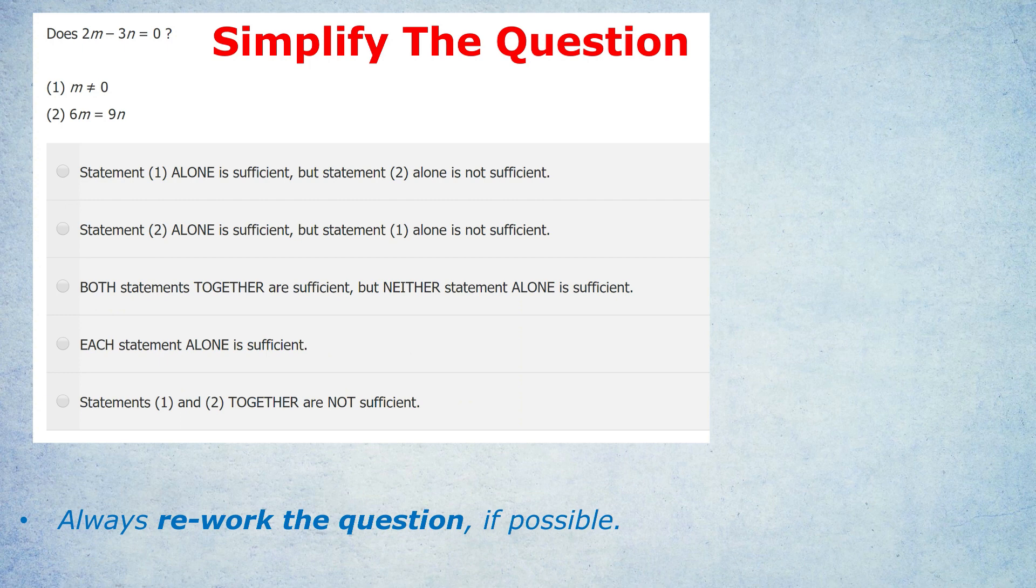I see many students who would get a question like this, does 2m minus 3n equals zero? And then they'd look straight to the statements. And they'd try and answer. They'd maybe pick some numbers. They would maybe get a little bit confused by statement 2 because it's algebra. And they wouldn't know what to do. But the problem there is that they're not reworking the question.